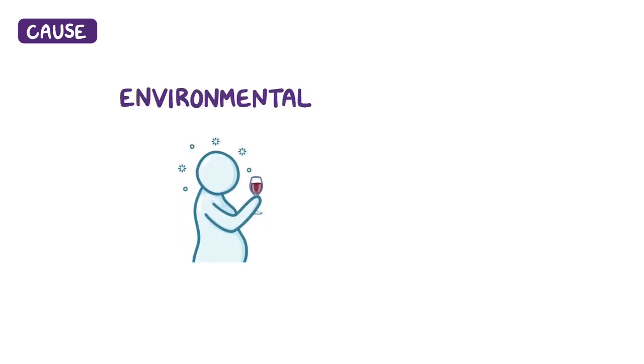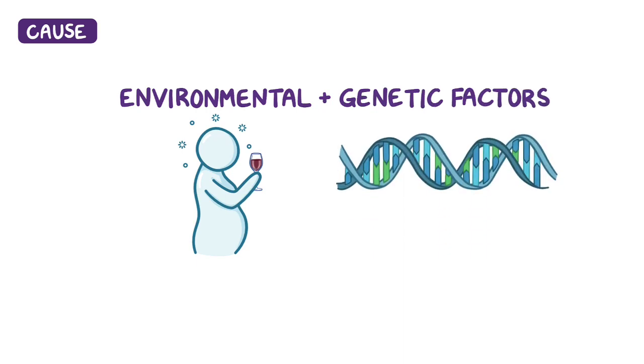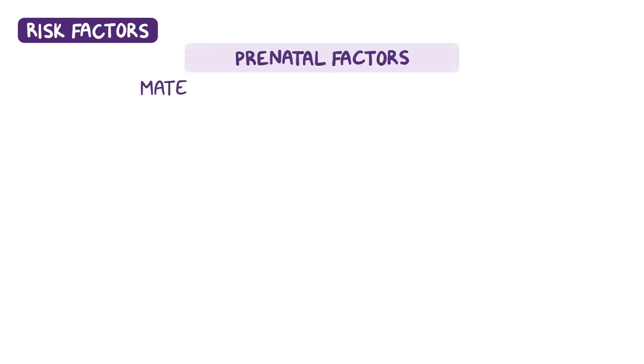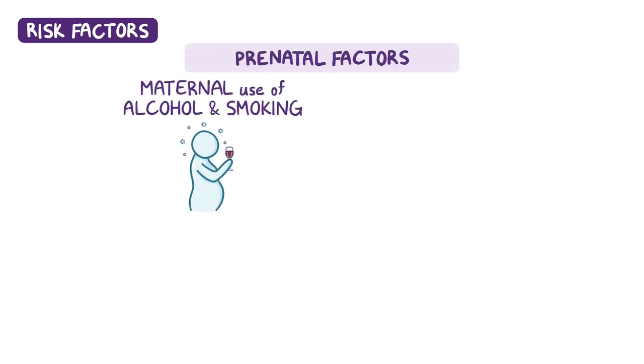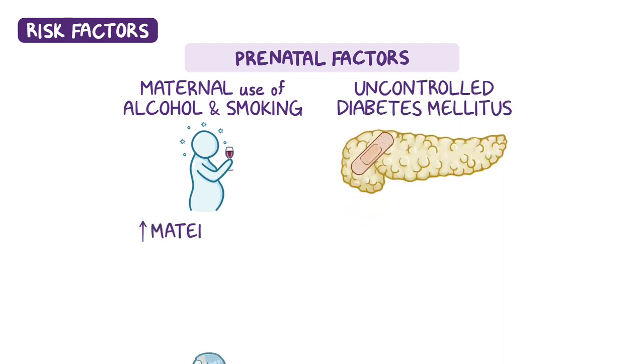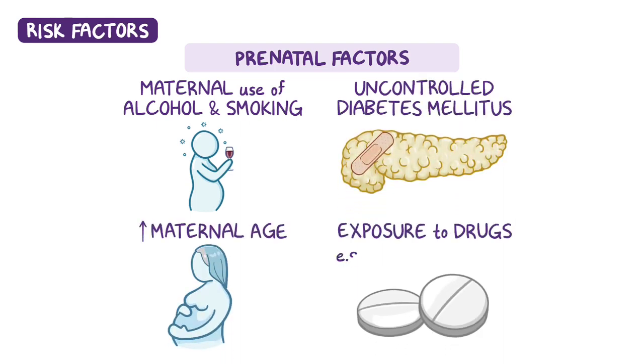The exact cause of both esophageal atresia and tracheoesophageal fistula isn't known, but it has been suggested that environmental factors, along with genetic factors, play an important role in their development. There are some risk factors associated with both these conditions. They include prenatal factors such as maternal use of alcohol and smoking, uncontrolled diabetes mellitus, increased maternal age, or exposure to drugs like methimazole and diethylstilbestrol.